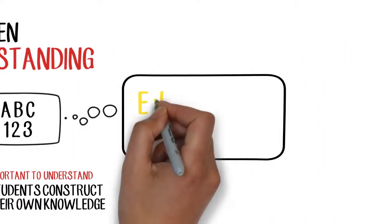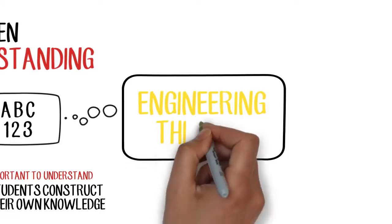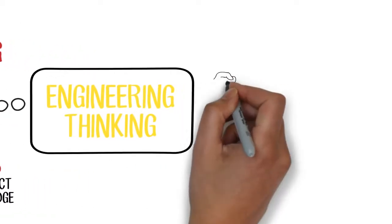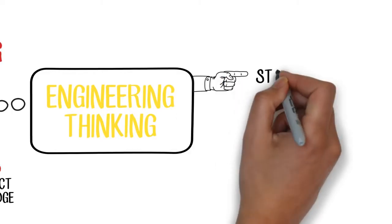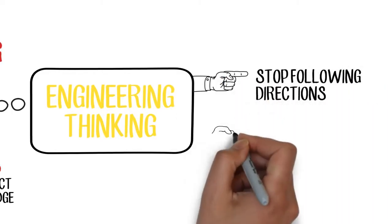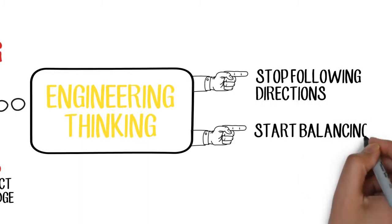Finally, one of the things that we spend a lot of time looking at is what really catalyzes engineering thinking. What causes kids to start thinking like an engineer? That is, stop following directions and start thinking on their own. Start balancing out constraints and ideas.